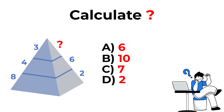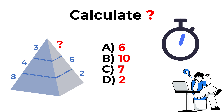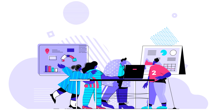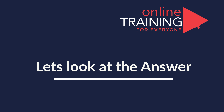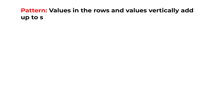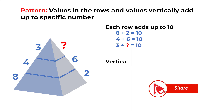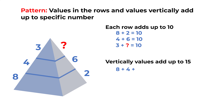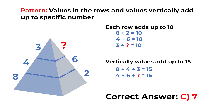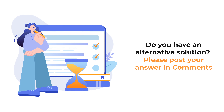Give yourself a little bit of time — this might be easy for some and require some thinking for others. As always, look for patterns. Each row adds up to 10, and vertically values also add up to 15. So the correct answer is choice C, 7.